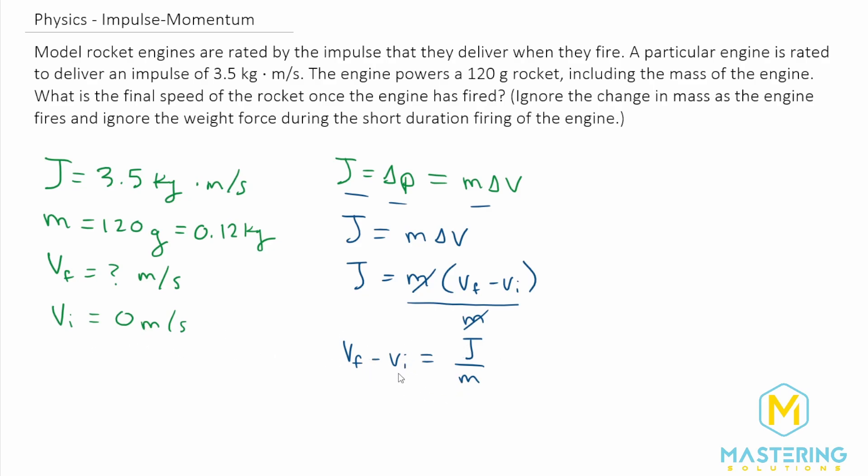Like we talked about already, we know that the initial velocity is going to be 0. So that's gone. So the final equation is going to be velocity final is equal to J divided by M.